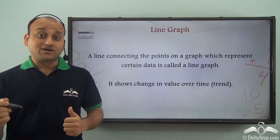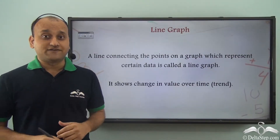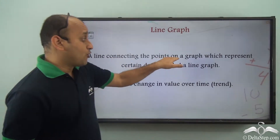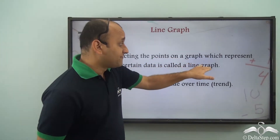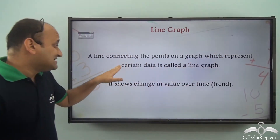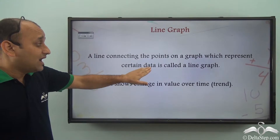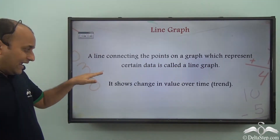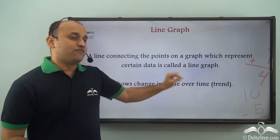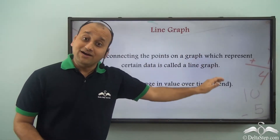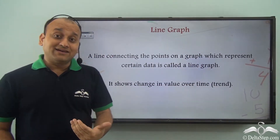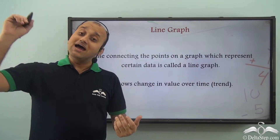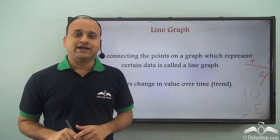We have learned what a line graph is. A line connecting the points on a graph which represents certain data is called a line graph. It shows change in value over time, or a trend. So a line graph is best for representing a trend in data.